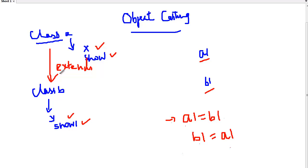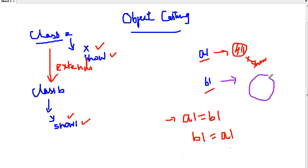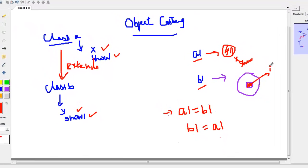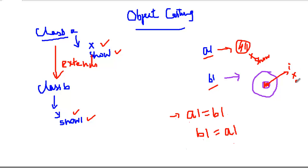We have an inheritance relation where class B extends A, so A is the superclass and B is the subclass. The A1 object contains variable X and method show. The B1 object inherits X and show from A (shown in red as the inherited portion), and additionally contains its own variable Y and method show1.